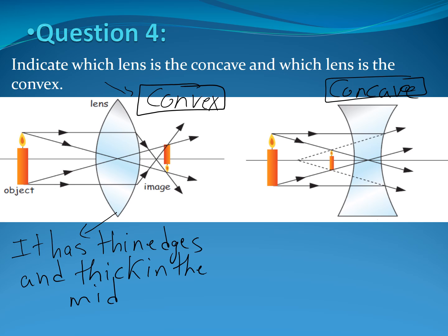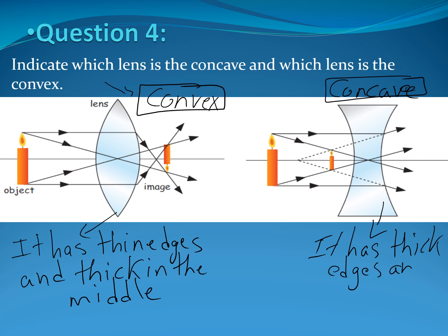Reem: what are the properties of the concave lens? It has thick edges and is thin in the middle. Excellent. Thank you.